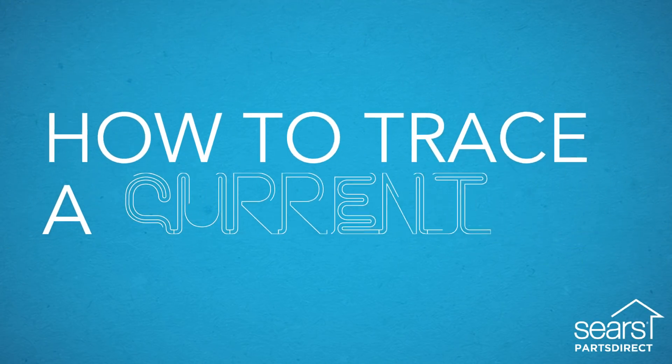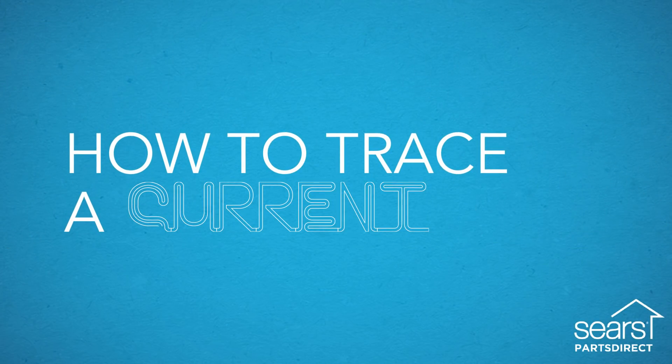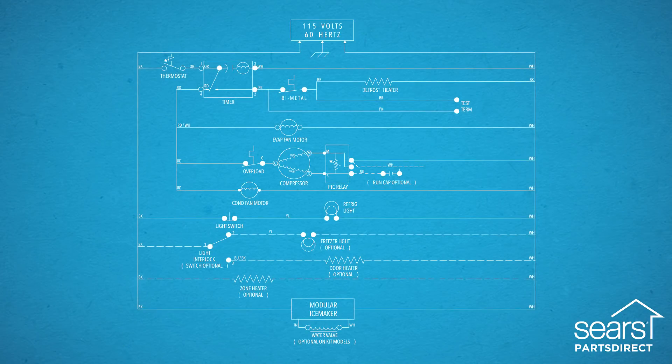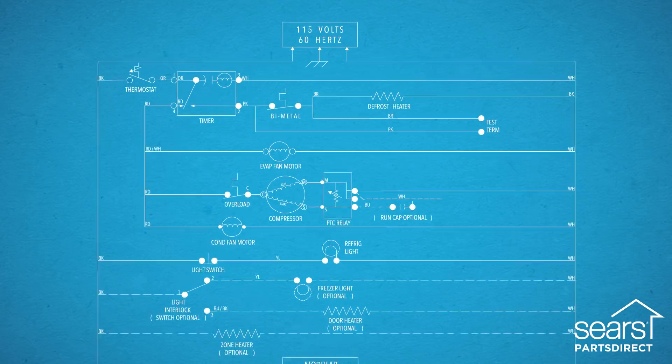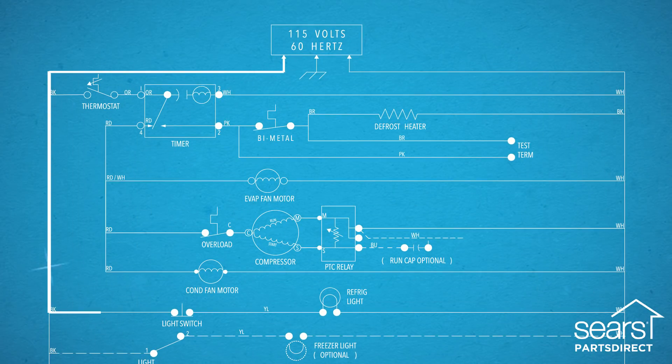Here's how to use a wiring schematic to trace a current to find the cause of an appliance problem. Let's look at an actual circuit on a wiring schematic. Here's the circuit that runs through the refrigerator light bulb.